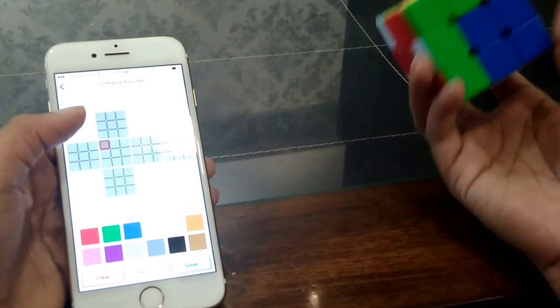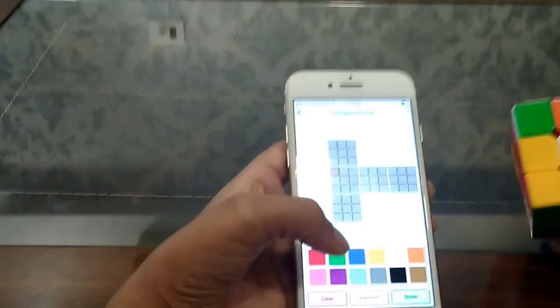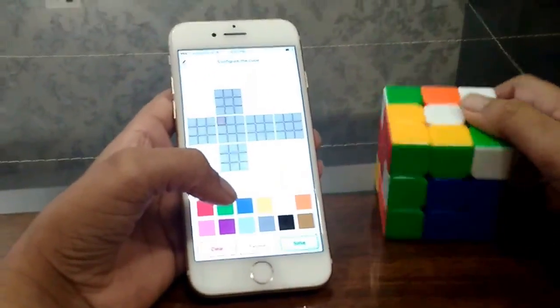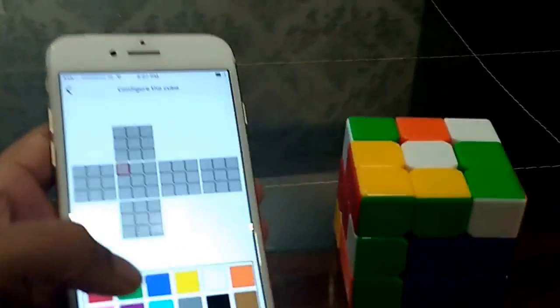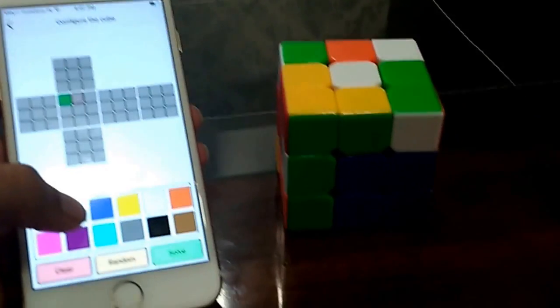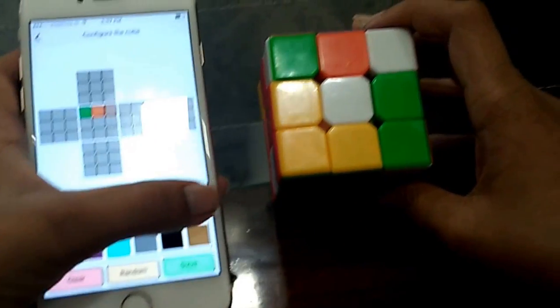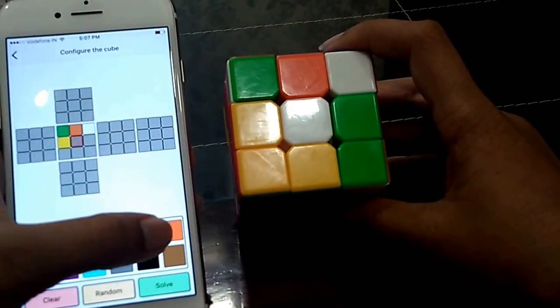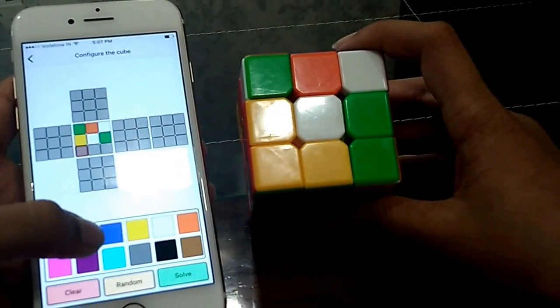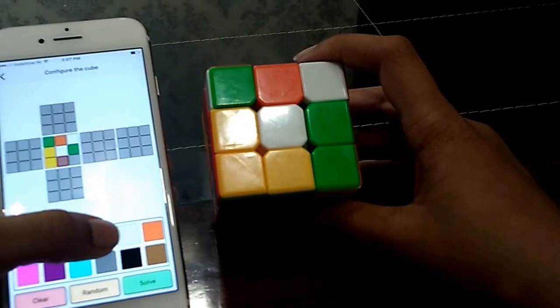Now let us configure a cube. We are going to start with the white center piece. Let us get right into it. Let us put all the colors. We need to keep on putting the colors.